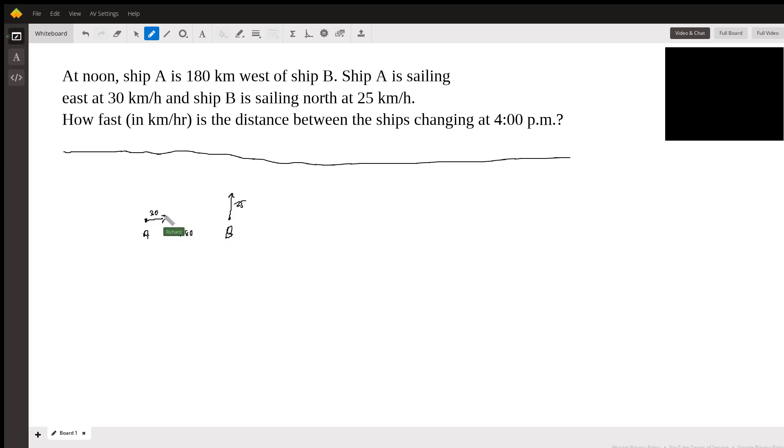But ship A is traveling east at 30 kilometers per hour, so at T hours after noon this is where ship A will be at this location. And ship B is sailing north at 25, so at T hours ship B will be at this location. So we have a nice little right triangle here.